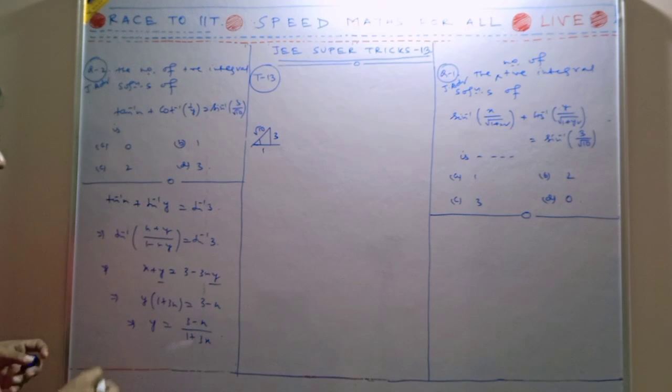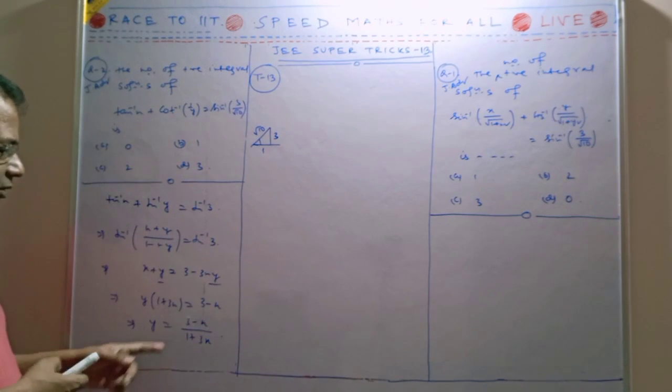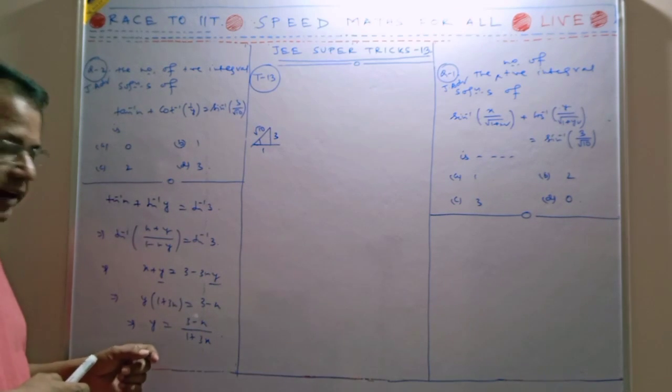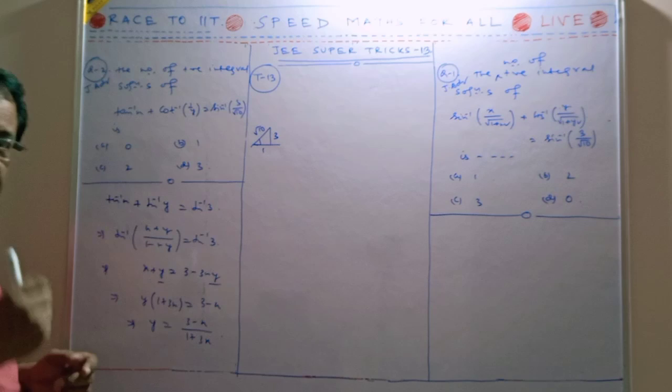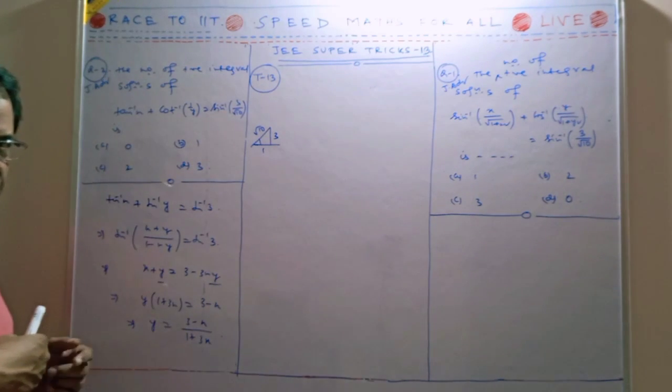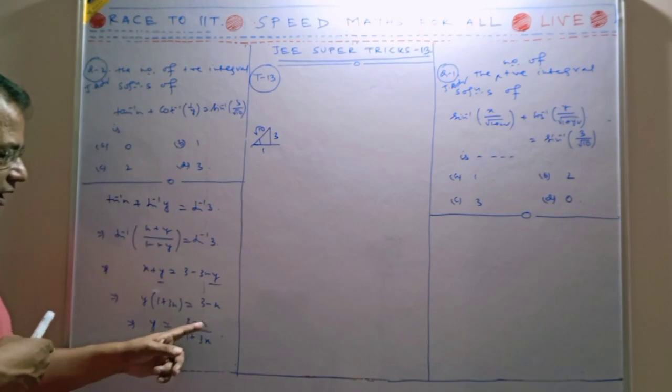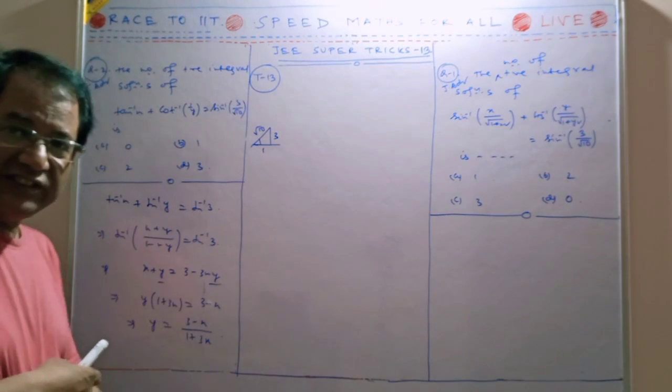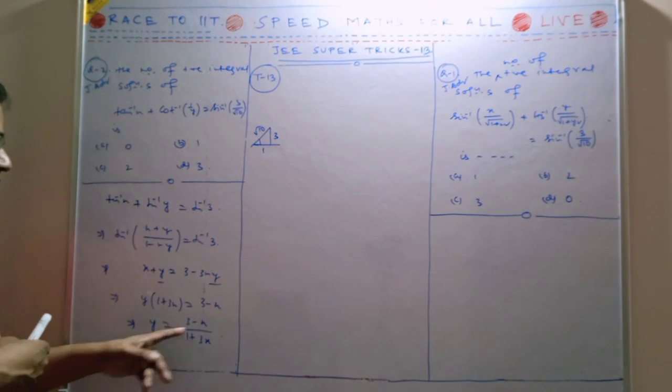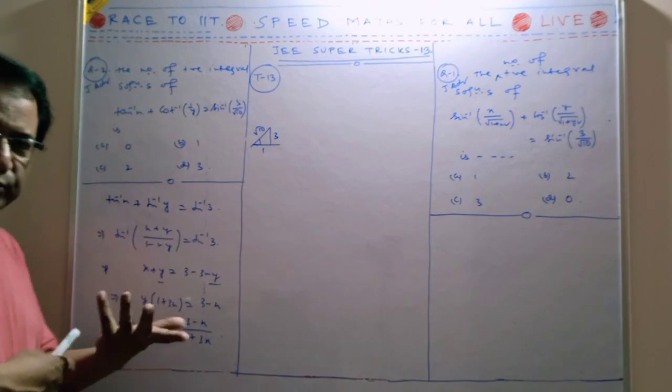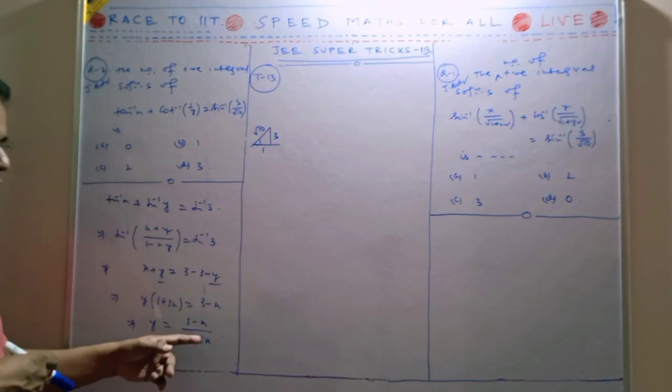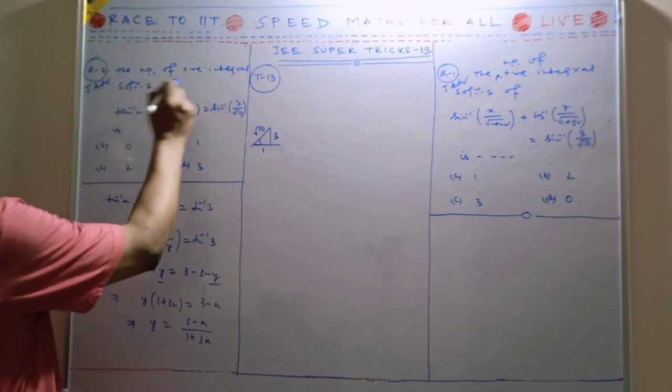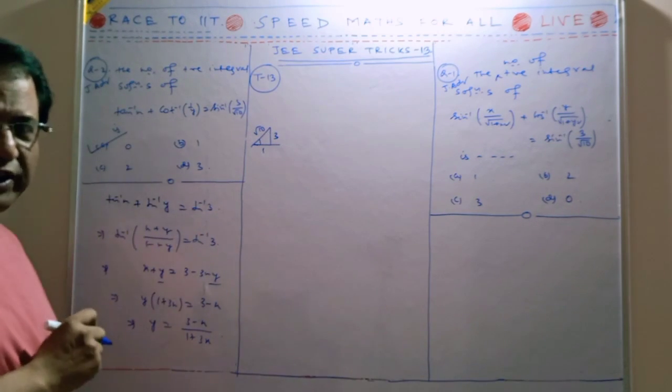Consider any value: if x equals 0, then y equals 3, but 0 is not positive so it can't be. Suppose x equals 1, then this becomes 2 by 4, which is 1 by 2, but 1 by 2 is not an integer. If x equals minus 1, that's not positive. So no positive integral values satisfy this. Therefore the number of positive integral solutions is 0.